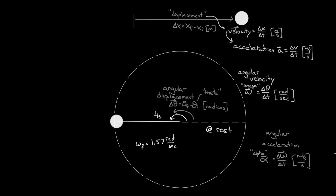If we use the formula omega equals delta theta over delta t, we get pi radians over four seconds, which gives us 0.785 radians per second. But this omega doesn't correspond to the initial or final omega — this would be the average omega. The average angular velocity between the initial and final point. The instantaneous omega started at zero, and the instantaneous final angular velocity was 1.57. So you've got to be careful: the instantaneous values are not necessarily equal to the average value.